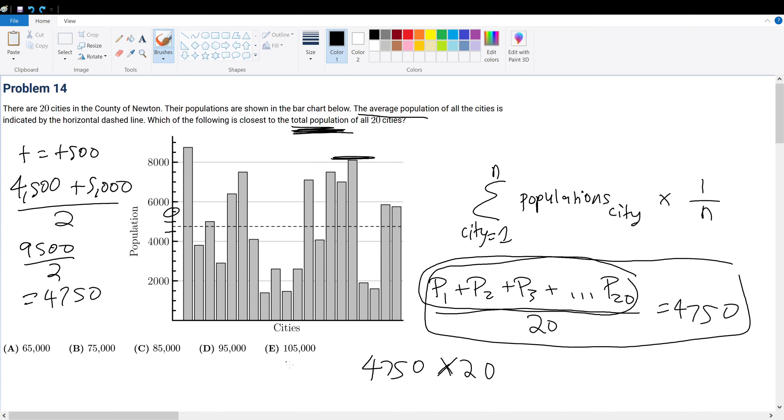What is 4750 times 20? Well, 475 times 2 is 950, but I purposely did not include this zero and this zero, so I must add them back in. The approximate answer is 95,000, bringing you to answer choice D.